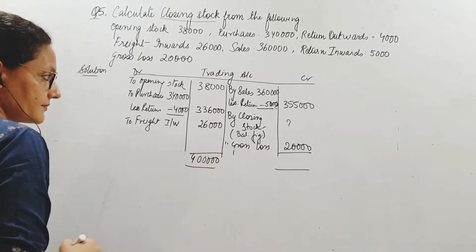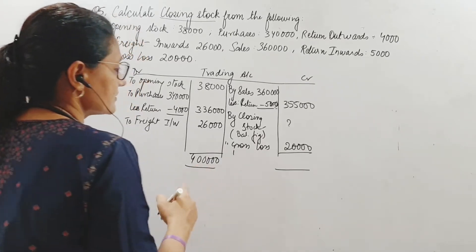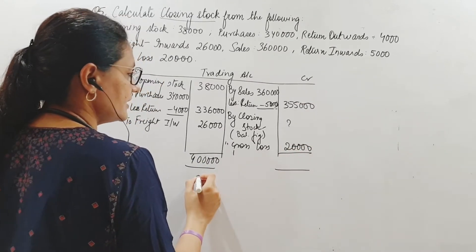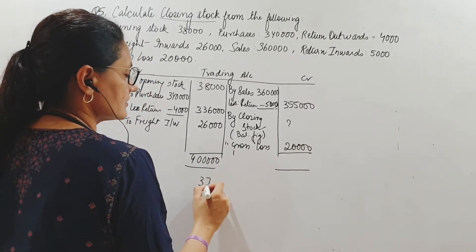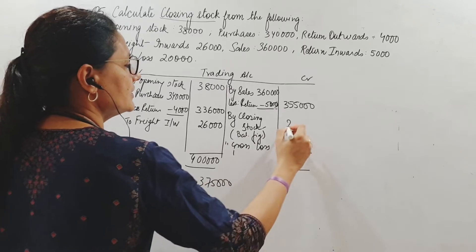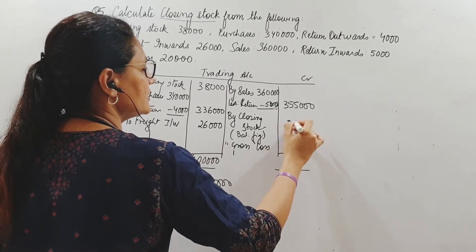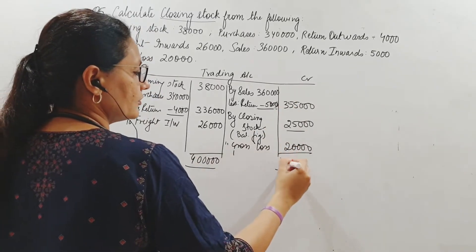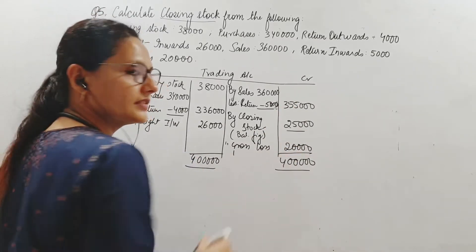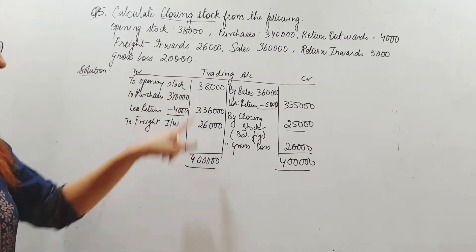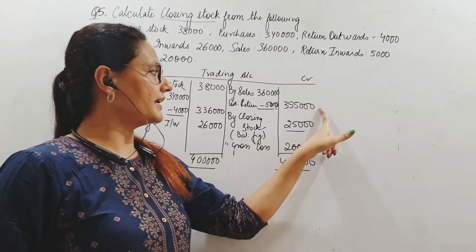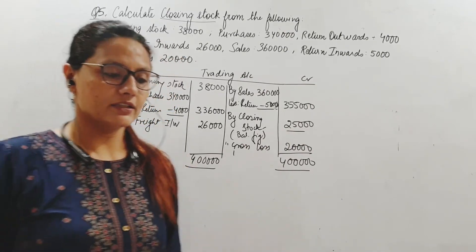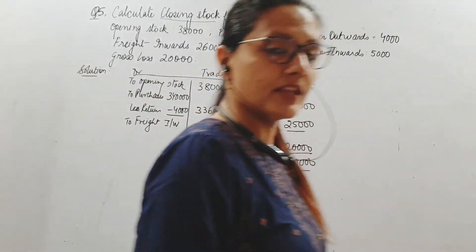This totals to 4 lakhs. So 25,000 is the value of my closing stock.